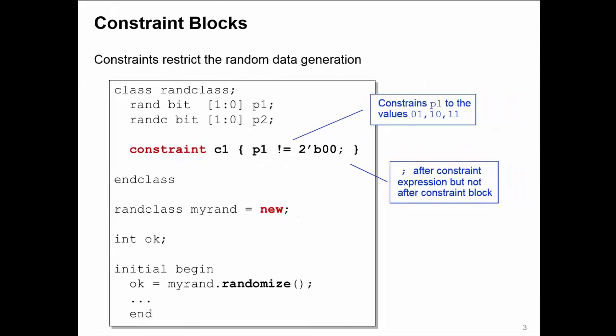So now I can create an instance myrand of randclass, I can call a randomize method of myrand, and I'll be randomizing P1 with the applied constraint that it can't be equal to zero.